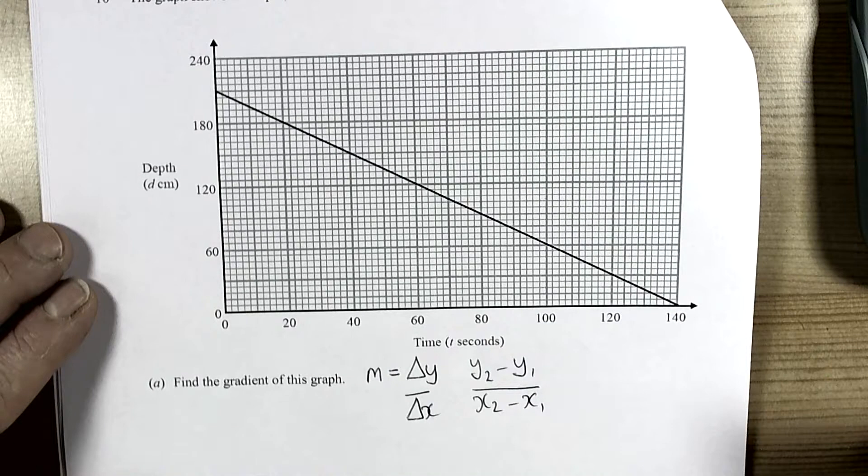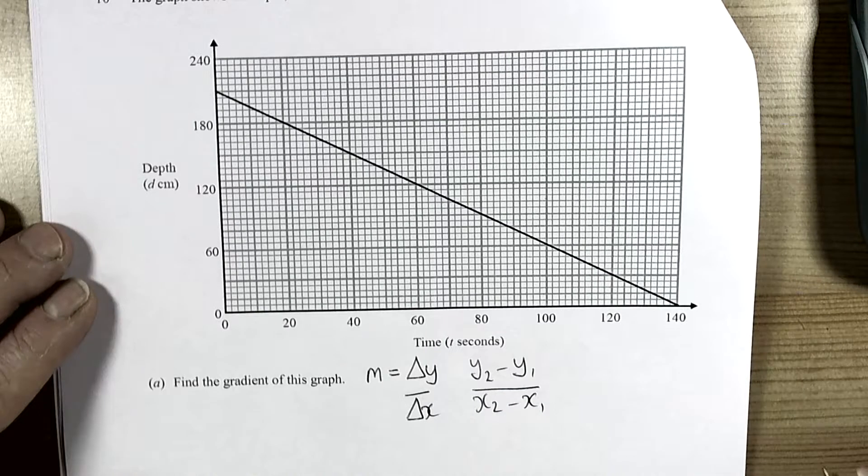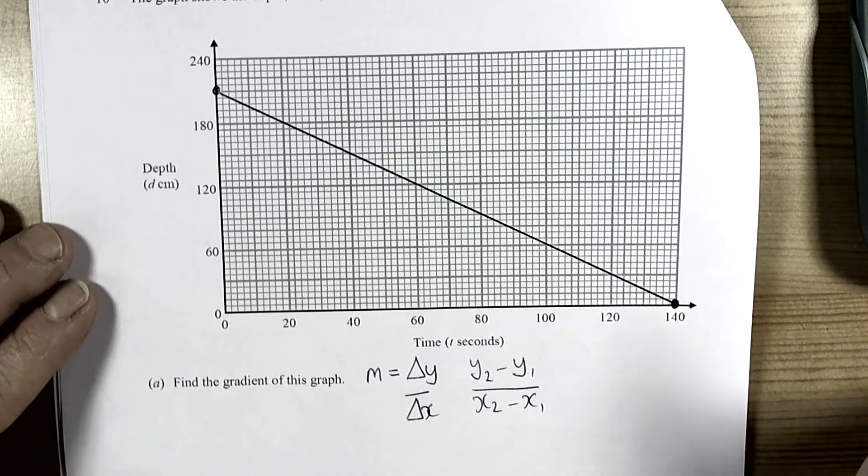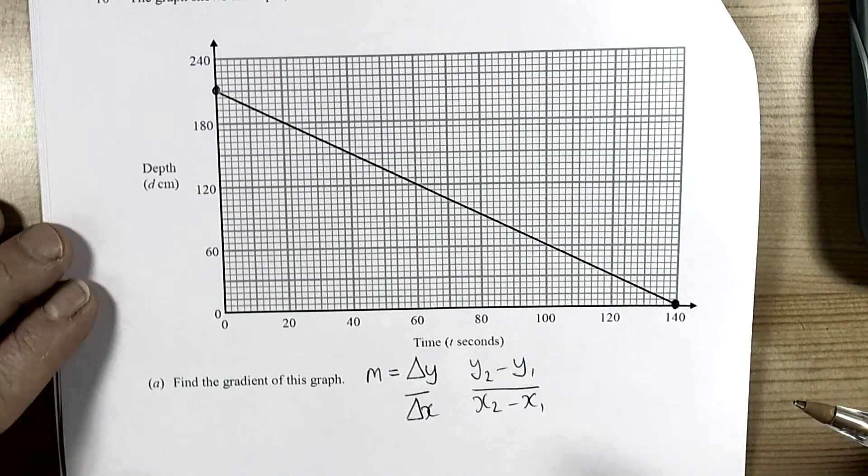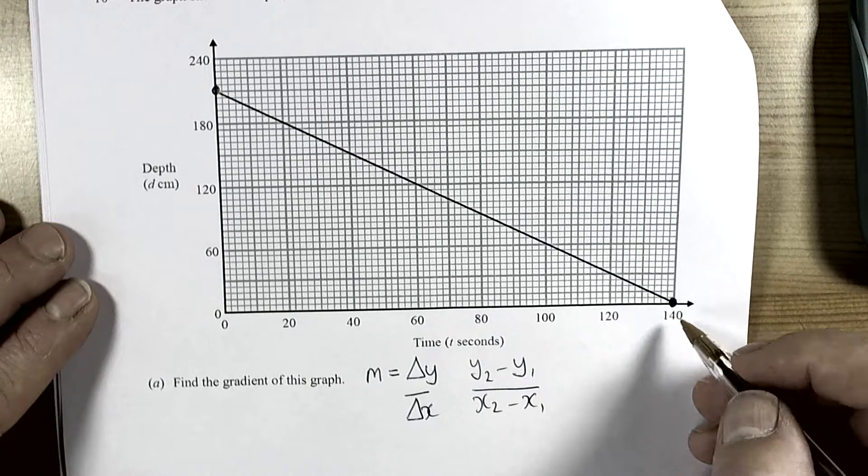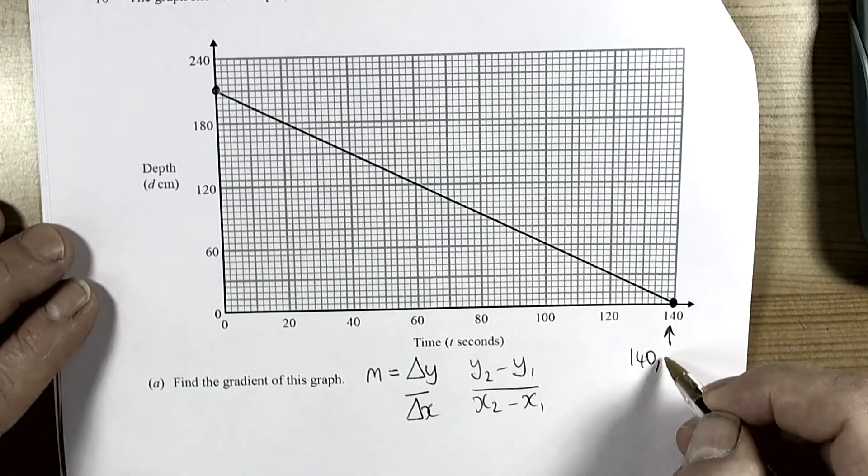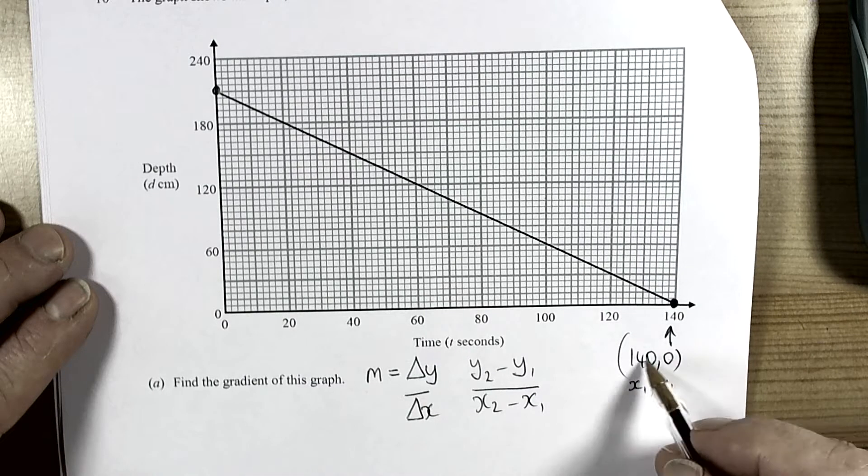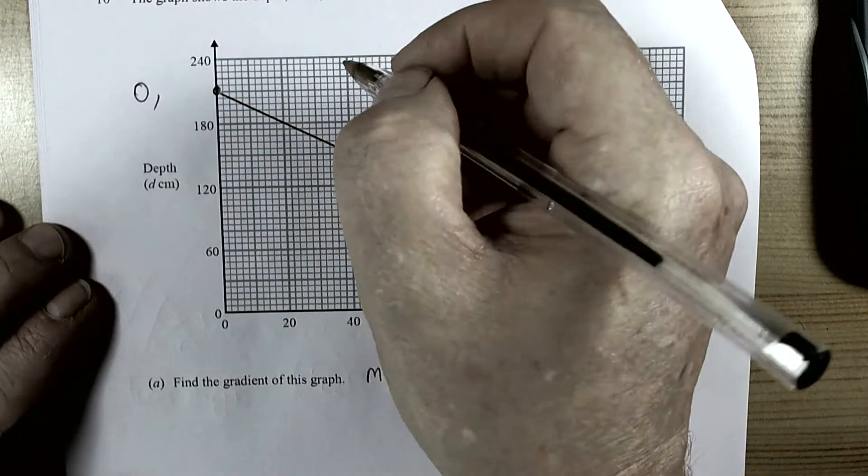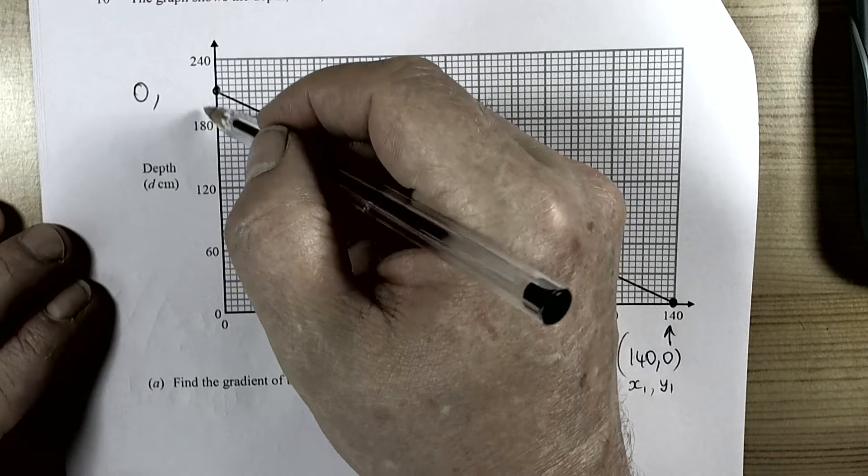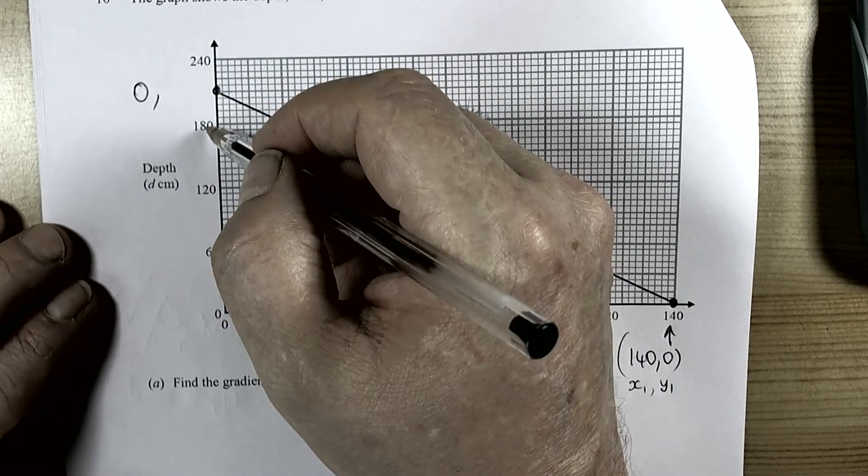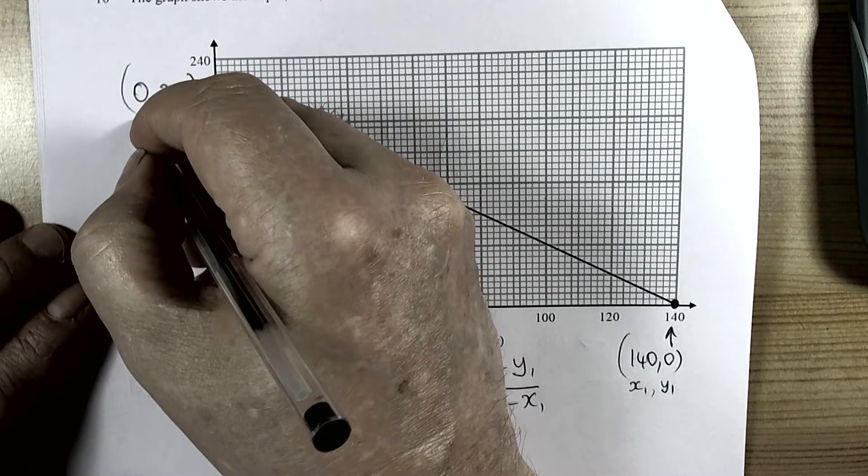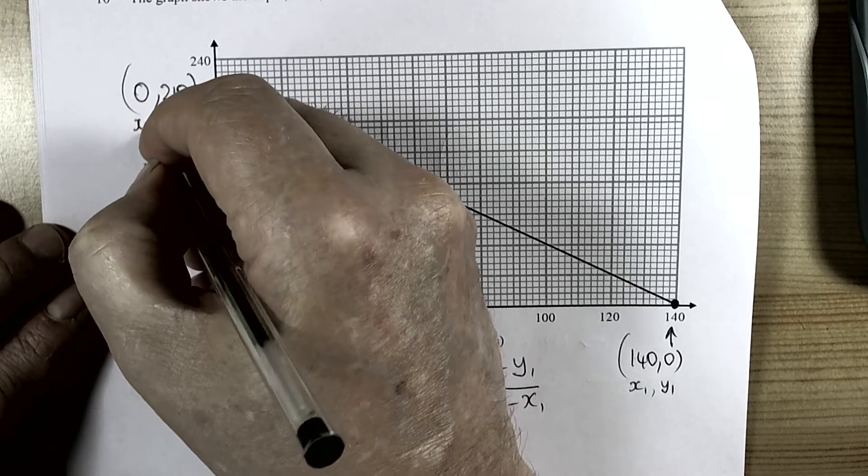So basically we need two coordinates on this line which will allow us to calculate the gradient. We might as well use this one and this one, because it uses the whole length of the line and therefore will give us the greatest accuracy. So this coordinate is 140, 0. That means our x1 value and our y1 values are defined by those. And this one has got a coordinate of 0 and we are halfway between 180 and 240. So there is a gap there of 60, so 30 to 210. And that gives us our x2, y2 values.